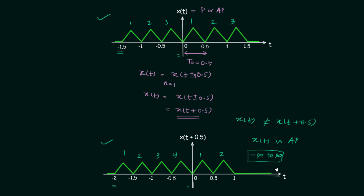If the signal is repeating from minus infinity to infinity and you perform a shift by any period, the signal is going to be the same. The repetition of the structure or value must be from minus infinity to infinity. To understand this, you can take this waveform and extend triangular pulses from minus infinity to infinity — then if you perform shifting left or right by any period, not only the fundamental time period, you will get the same waveform and the condition for periodicity will be satisfied.